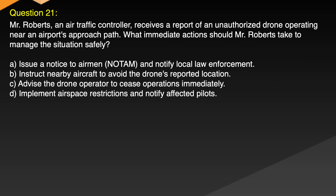Question 21. Mr. Roberts, an air traffic controller, receives a report of an unauthorized drone operating near an airport's approach path. What immediate action should Mr. Roberts take to manage the situation safely? A. Issue a NOTAM and notify local law enforcement. B. Instruct nearby aircraft to avoid the drone's reported location. C. Advise the drone operator to cease operations immediately. D. Implement airspace restrictions and notify affected pilots. Correct answer: D. Implement airspace restrictions and notify affected pilots.